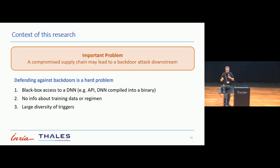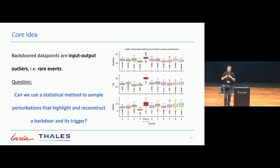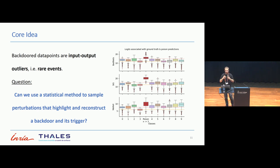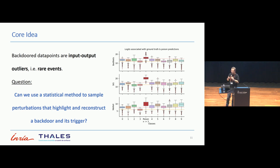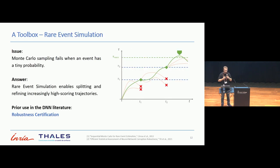So the question is: how do you address this issue of black-box attacks? We made a key observation: backdoor data points tend to have an outsized impact on the output of a model — whether it is a high logit, a high probit, or when you take all those backdoor inputs as a whole, maybe a heightened number of misclassifications or impact on labels. So the question is: if backdoor data points can be understood as outliers or rare events, can we use a method to sample them and use a rare event simulation method to highlight that the model has been backdoored and maybe recover the trigger of the backdoor itself?